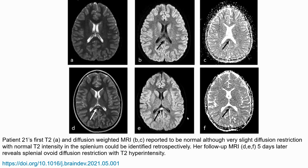The area appeared nearly normal, although very slight diffuse restriction with normal T2 signal in the splenium could be identified retrospectively. On follow-up five days later, there was reversal of the splenial diffuse restriction, which was very striking on T2 hyperintense imaging.